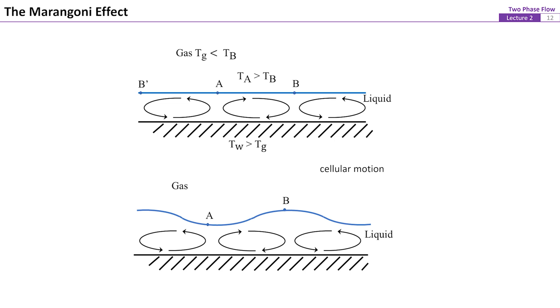For example, if the surface tension decreases with increasing temperature, the liquid near to the interface will be dragged from the high temperature regions point A on this figure towards the low temperature regions point B. The tumbling flow between the hot and cold spots as shown here is called cellular flow.